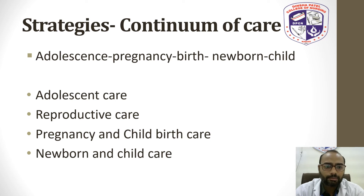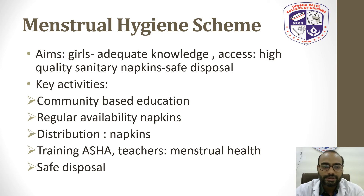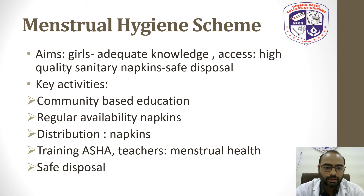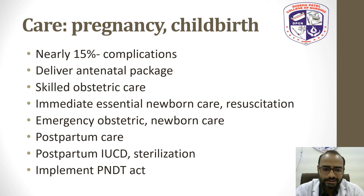Other strategies under the scheme include a continuum of care from adolescence through pregnancy, birth, newborn, and child care. The menstrual hygiene scheme for adolescent girls covers community education on menstrual hygiene, regular availability of sanitary napkins, distribution of sanitary napkins in some states, and training of ASHAs and teachers on menstrual hygiene and safe disposal.